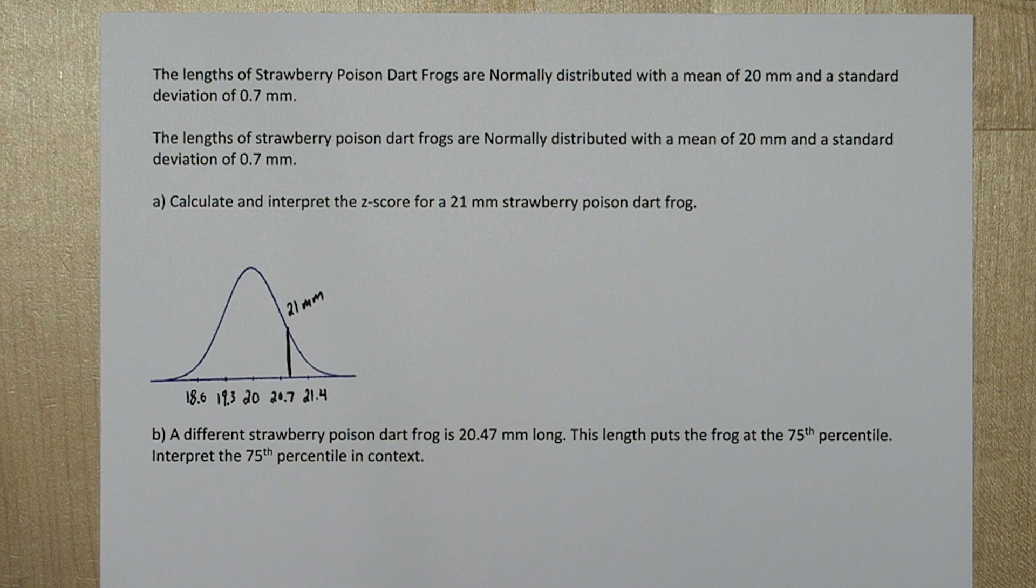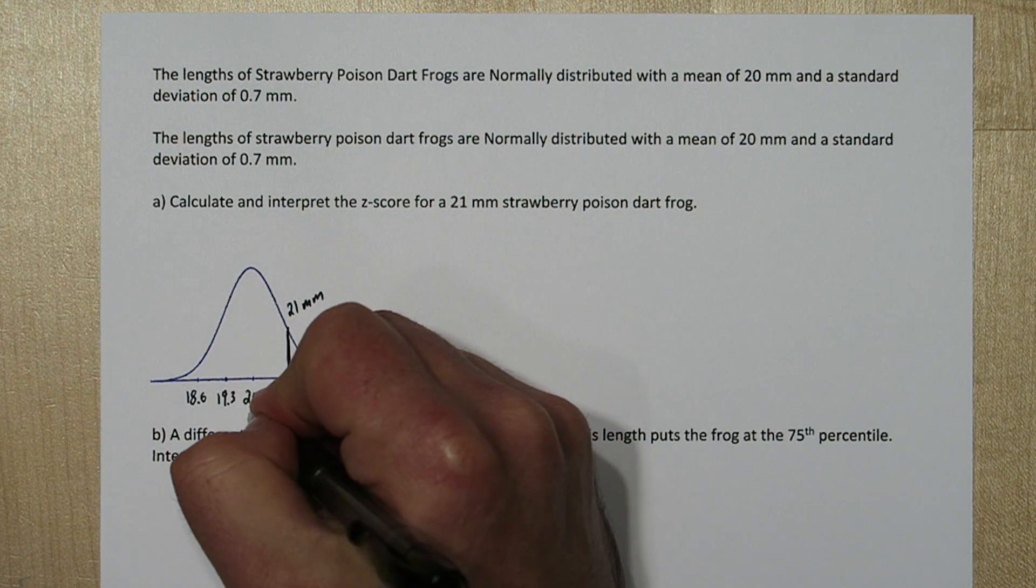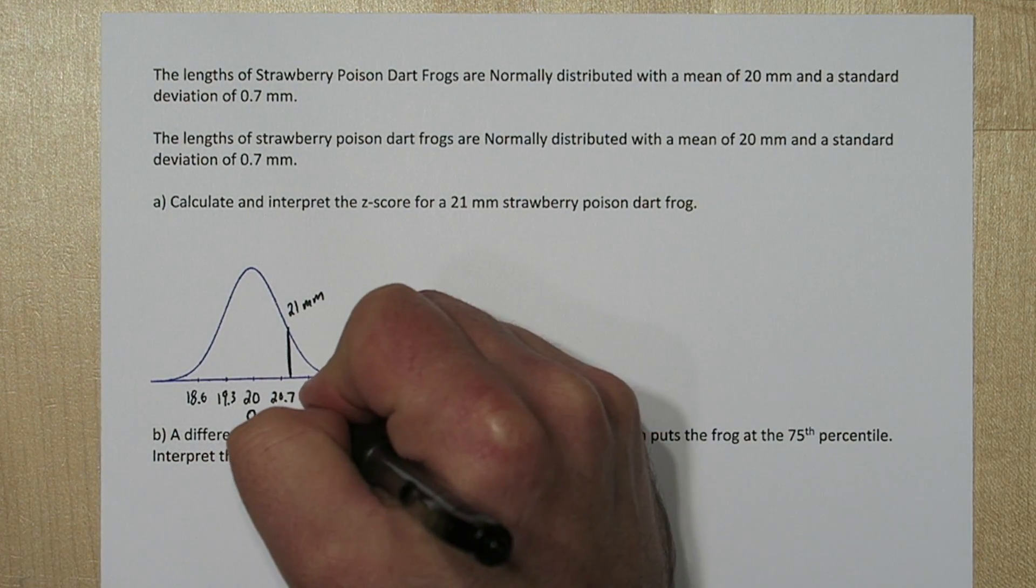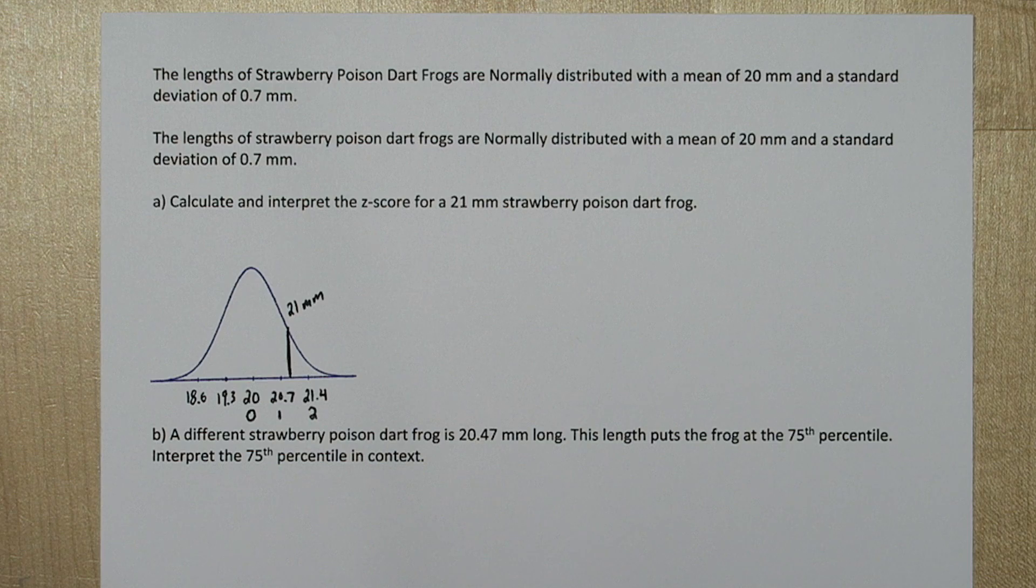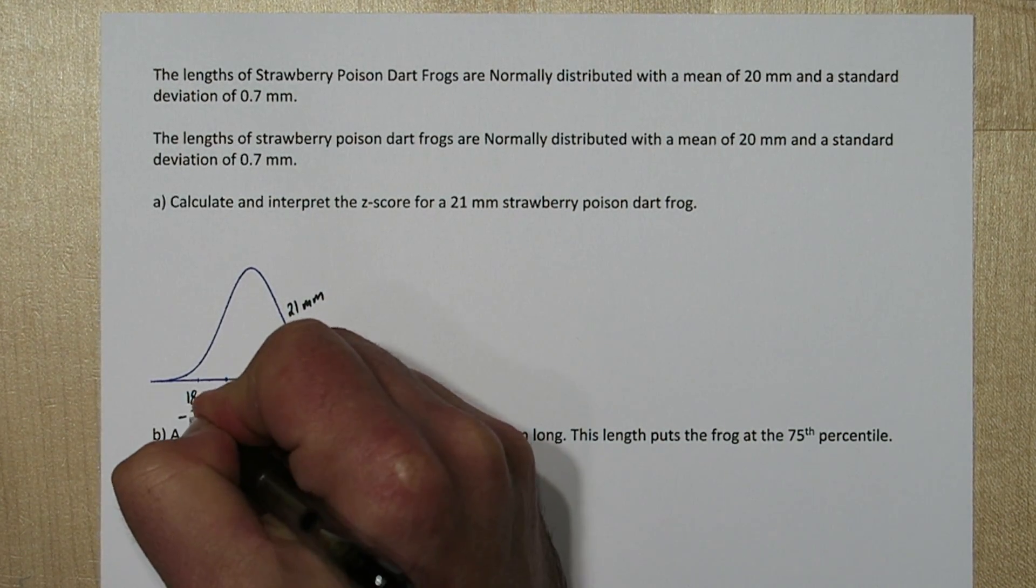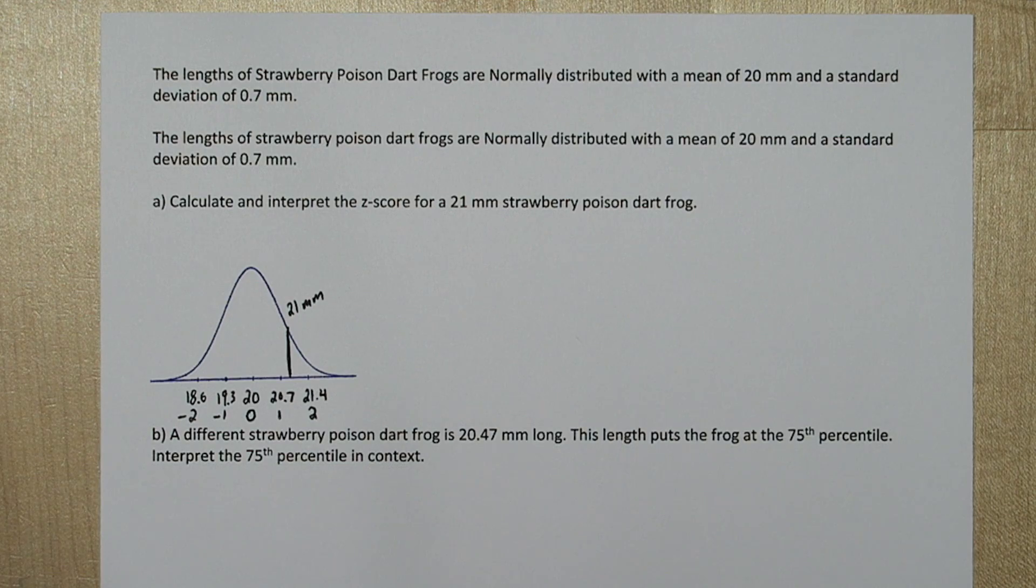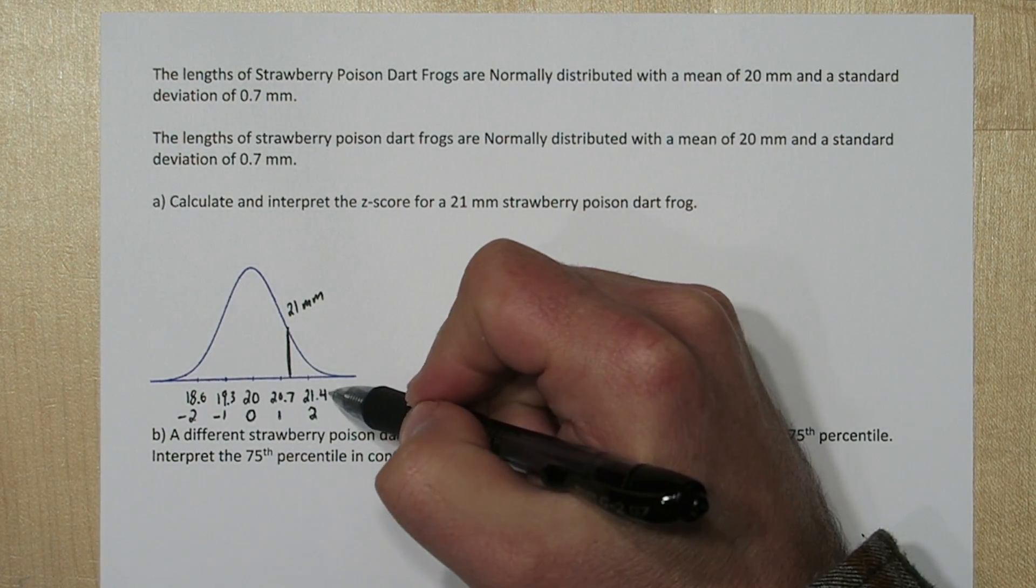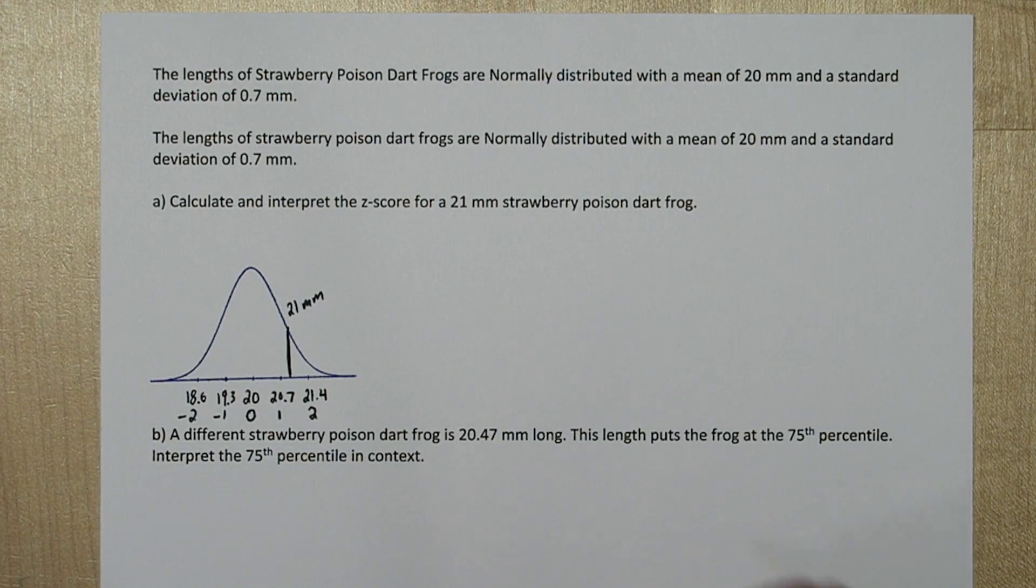Let's do an axis for z-score. So a z-score of 0 corresponds to exactly the mean. This would be a z-score of 1, one standard deviation from the mean, and a z-score of 2, two standard deviations above the mean. And over here we'd have negative 1 and negative 2. So just by looking at this we know our z-score for 21 millimeters is going to be between 1 and 2.